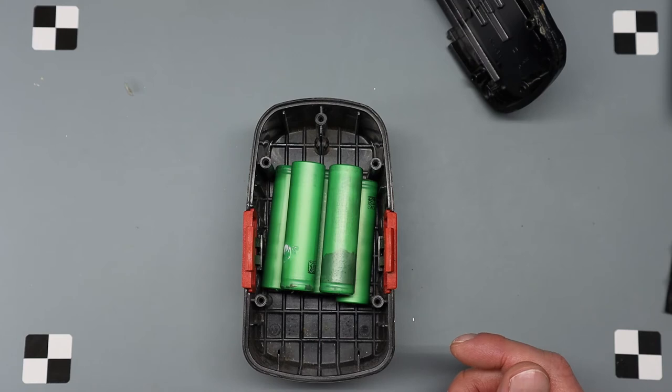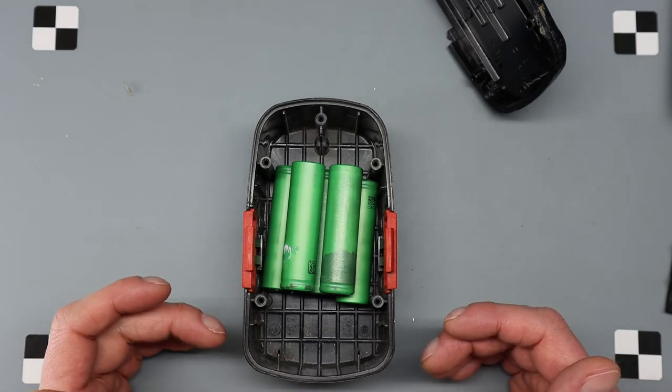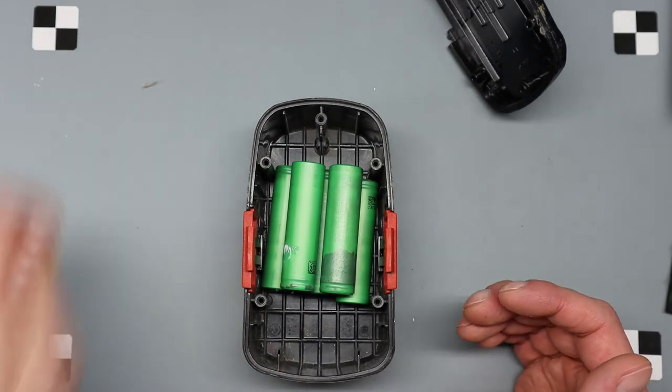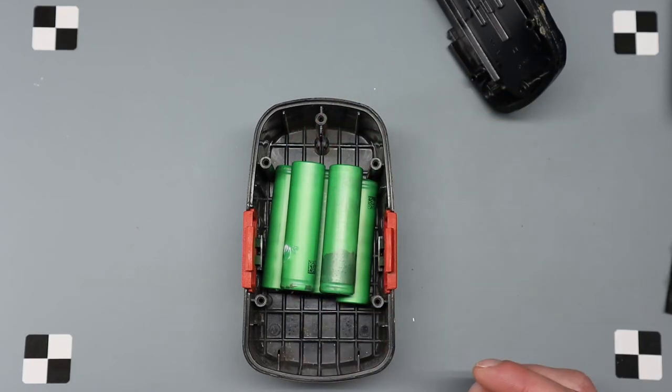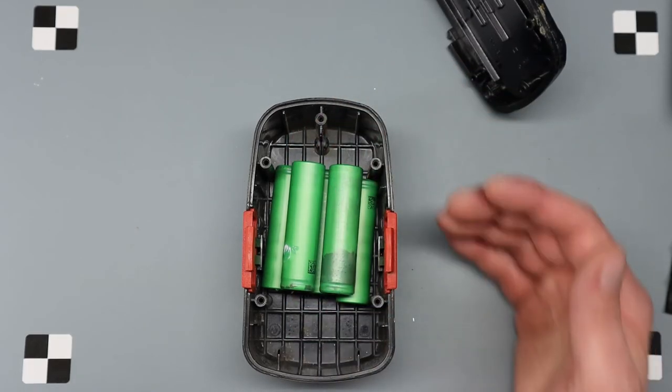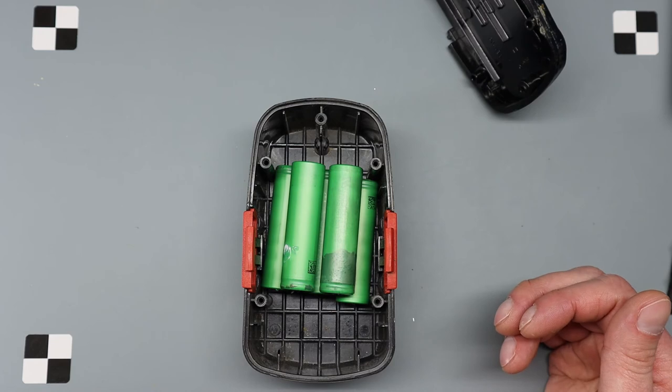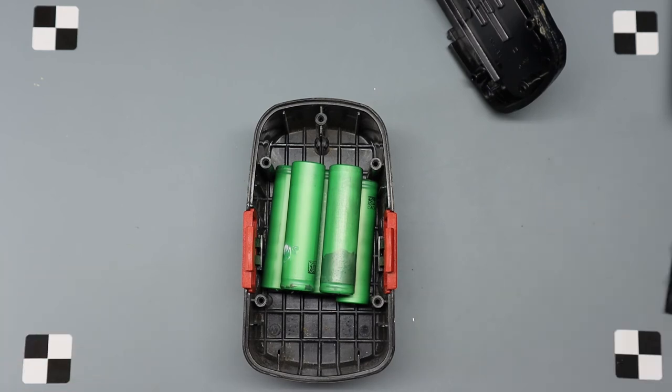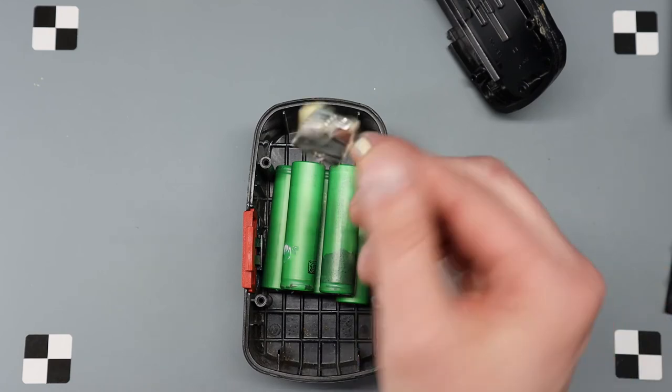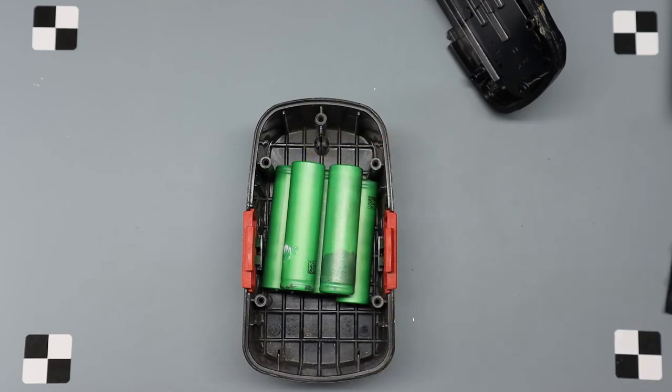The other thing I'm going to do is I'm not going to spot weld these together. I'm going to figure out a way to put them in there with not necessarily a clamping force, but maybe a spring force. Some way of forcing them together without having to spot weld them. So I can take it apart and replace the cell without wasting these metal clip things on all these spot welded cells.